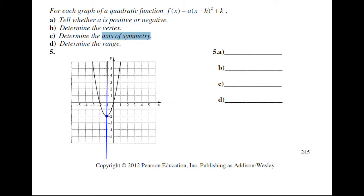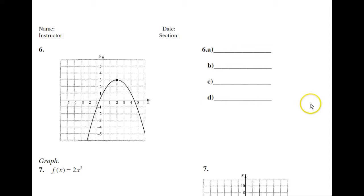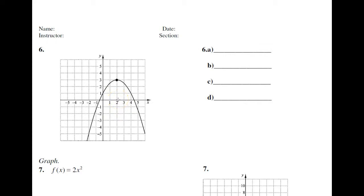Now here's a parabola that opens downward. The vertex is 3 and the axis of symmetry is 2. You'll see how it works in the formula in the next section. Since this is the highest point, this is the maximum. So when a, in that formula, is negative, you're going to have a parabola that opens downward, and the vertex will be the maximum.